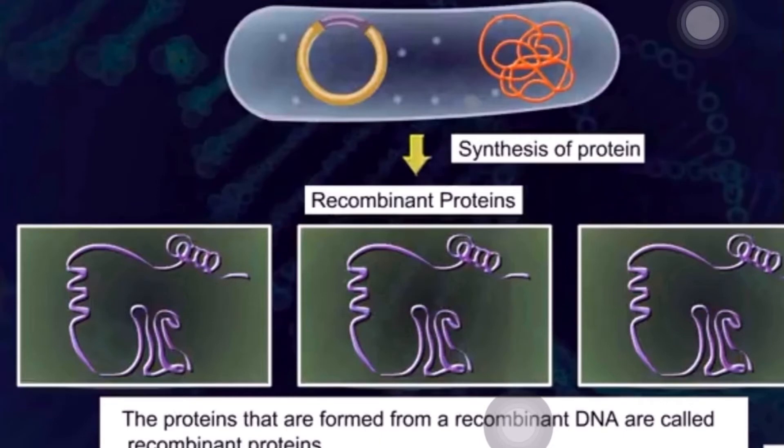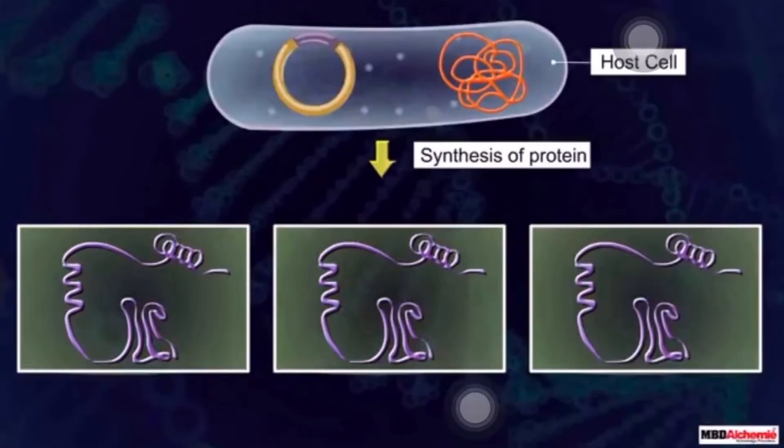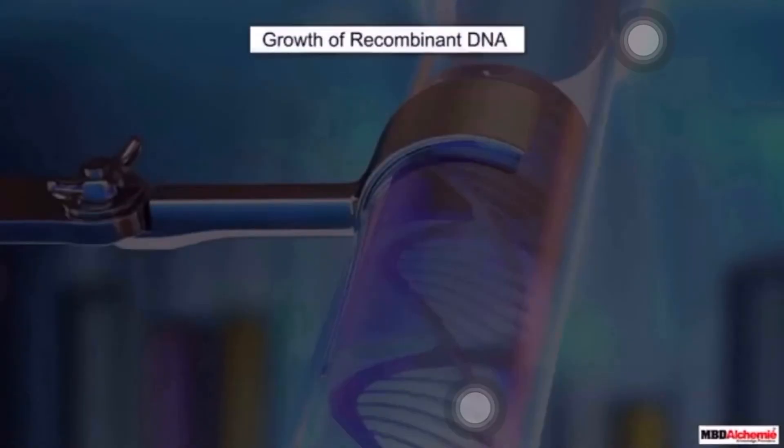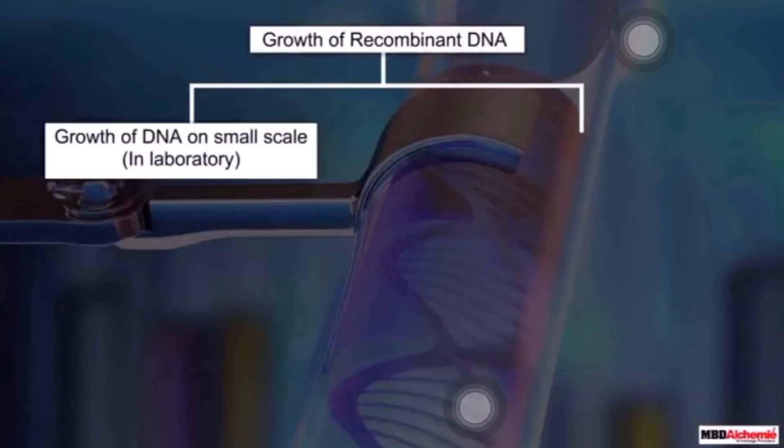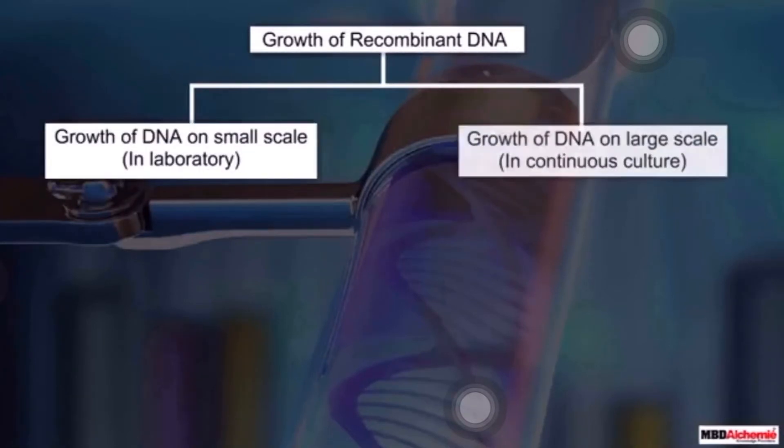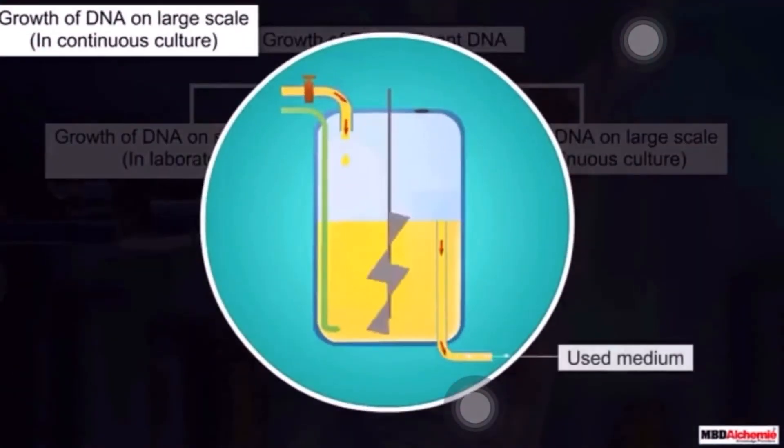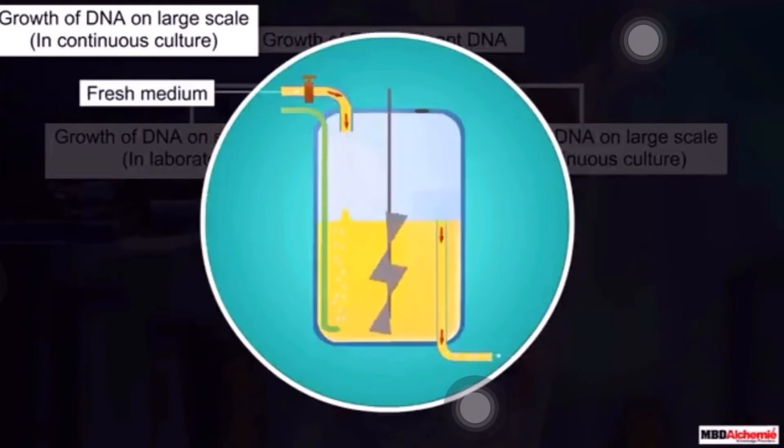Let us see the next step in recombinant DNA technology, that is, to obtain foreign product in huge quantity. Recombinant DNA can either be grown in small scale in laboratory, or can be multiplied on large scale in continuous culture. In continuous culture or large scale production of product, used medium is drained from one side and fresh medium is added from another side continuously.